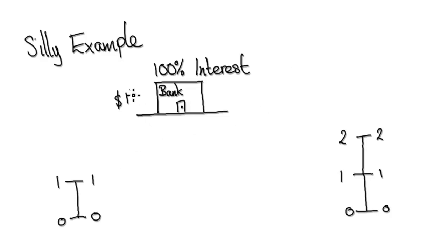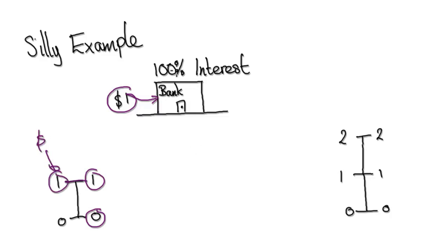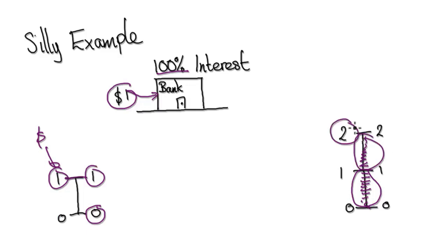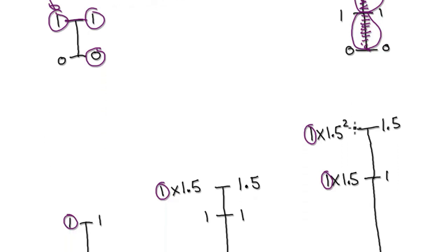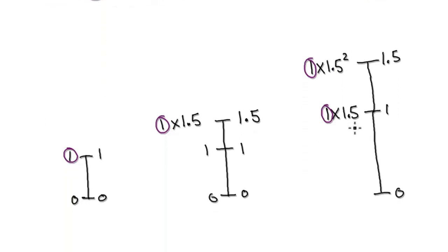So with this silly example, you put $1 into the bank. Your whole amount is $1. If the bank gives you 100% interest each year, then at the end of the year you will have $2.